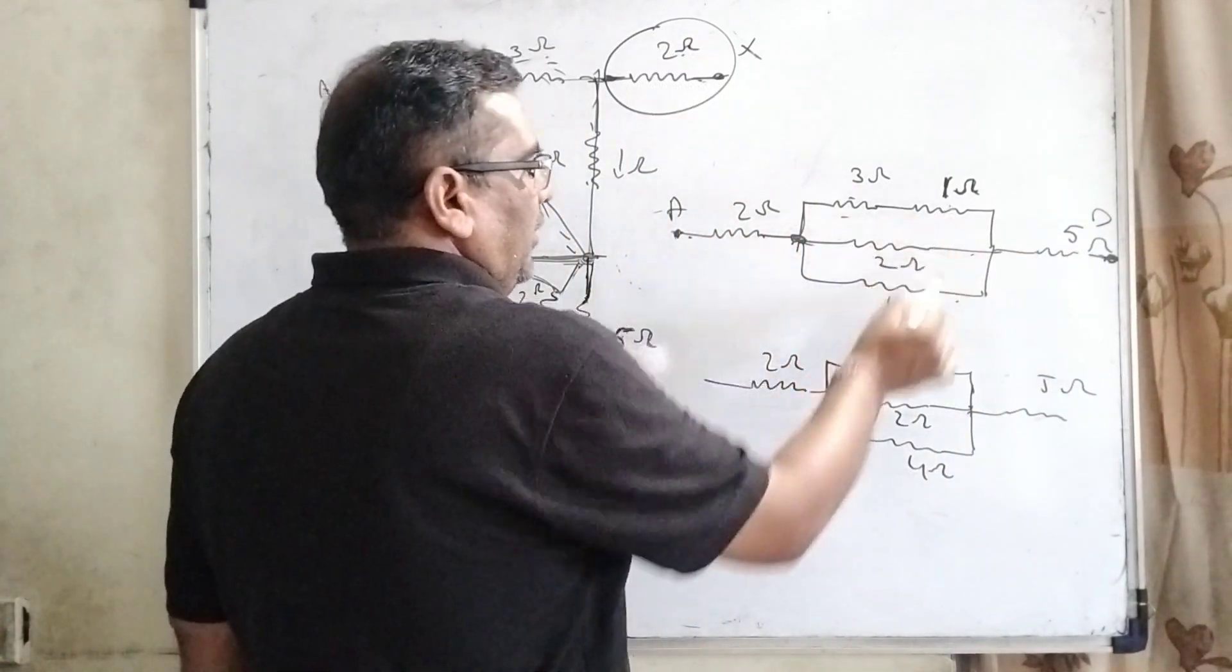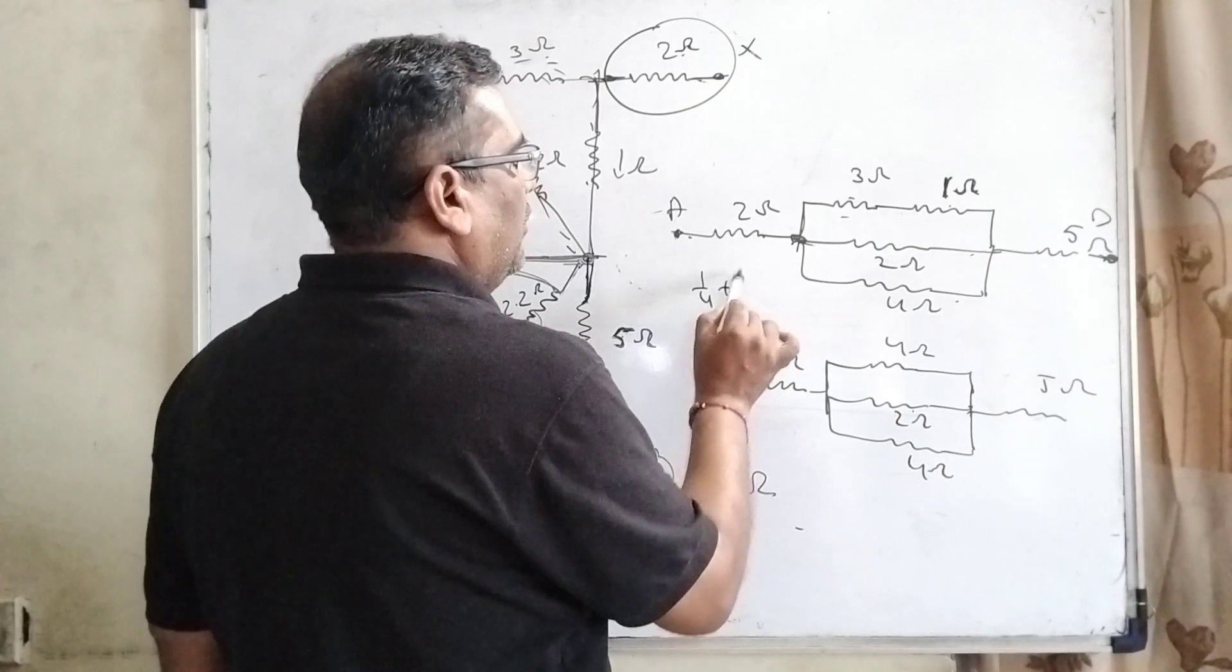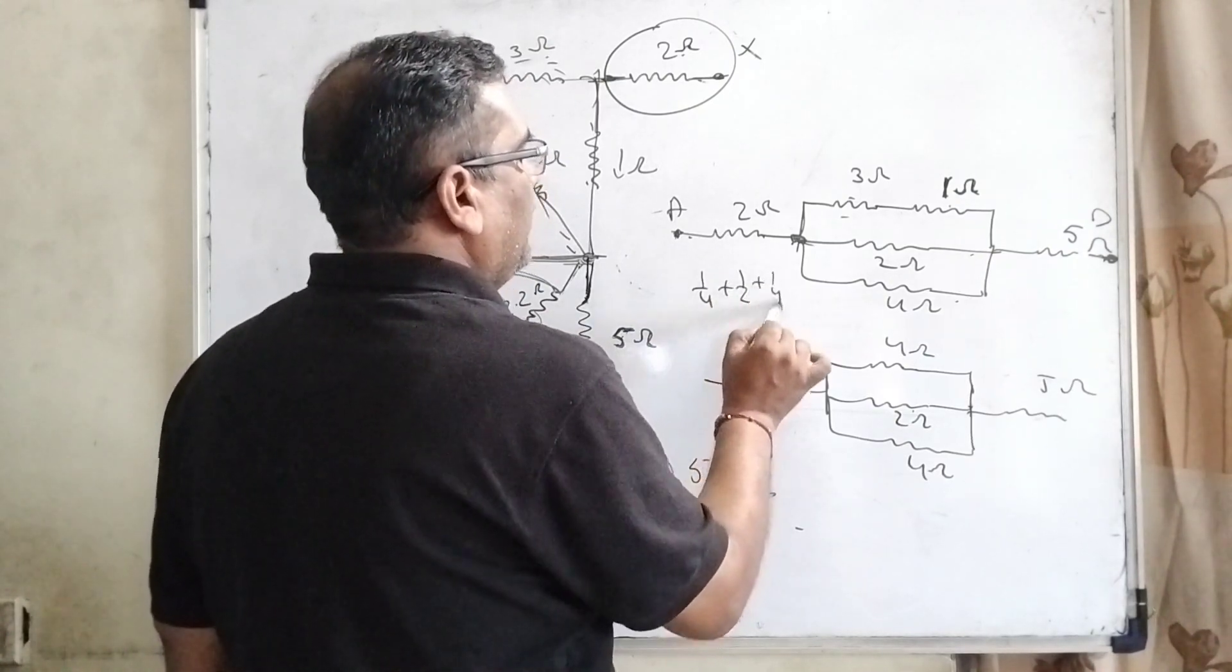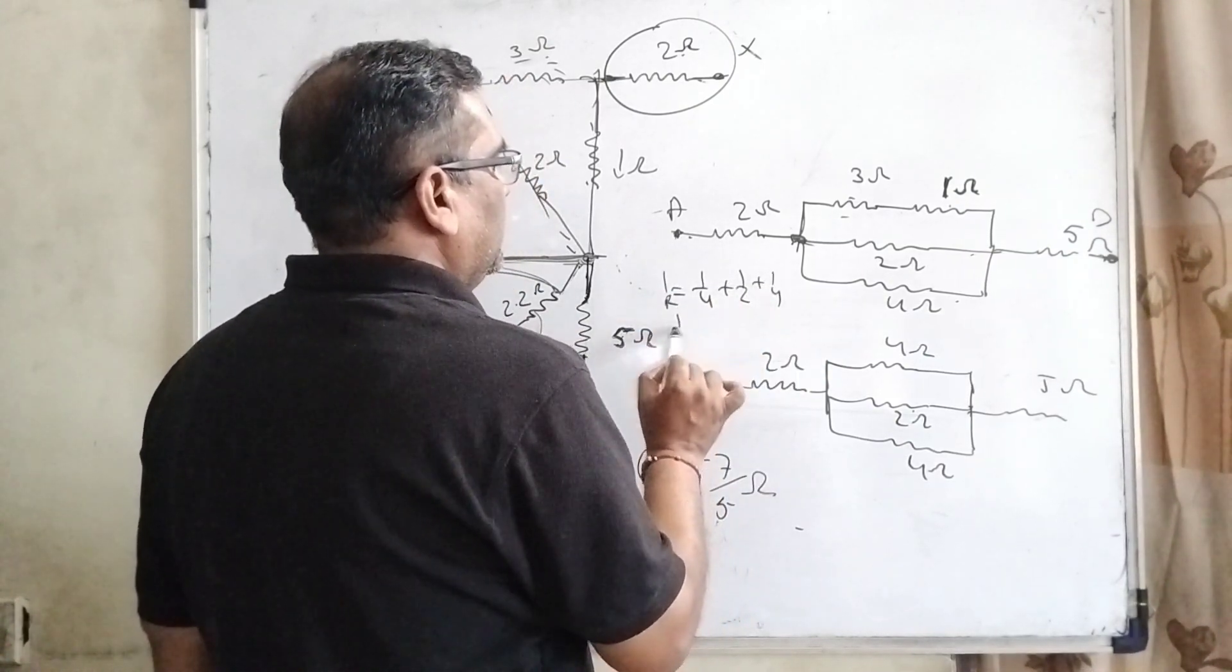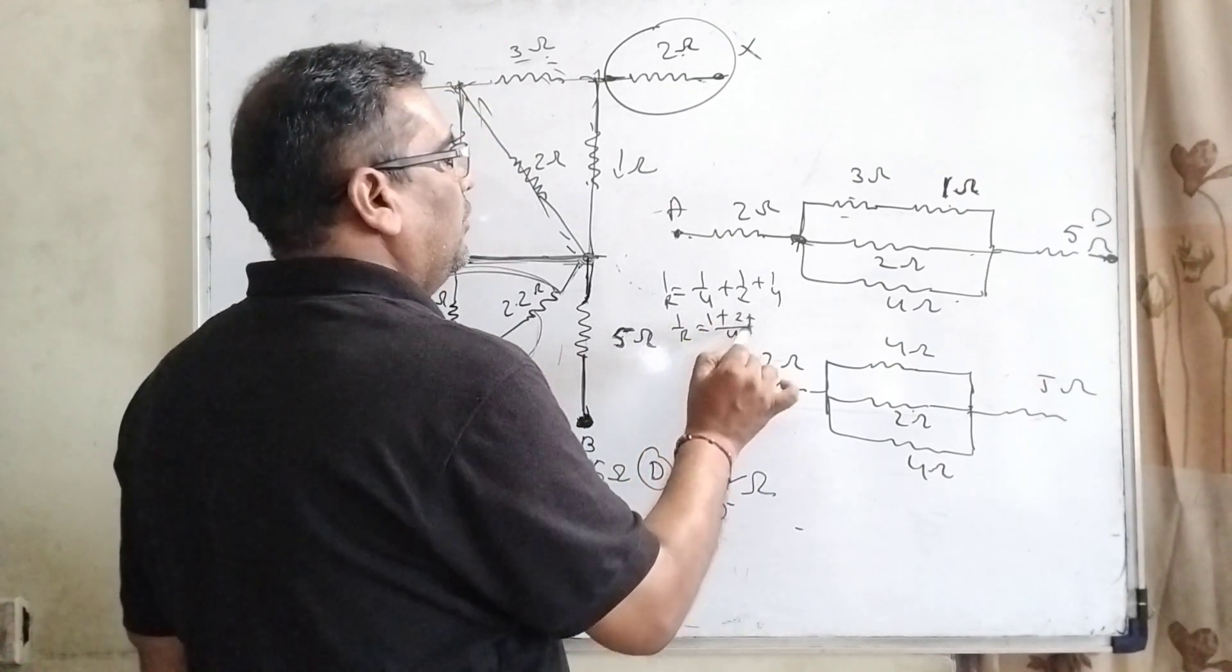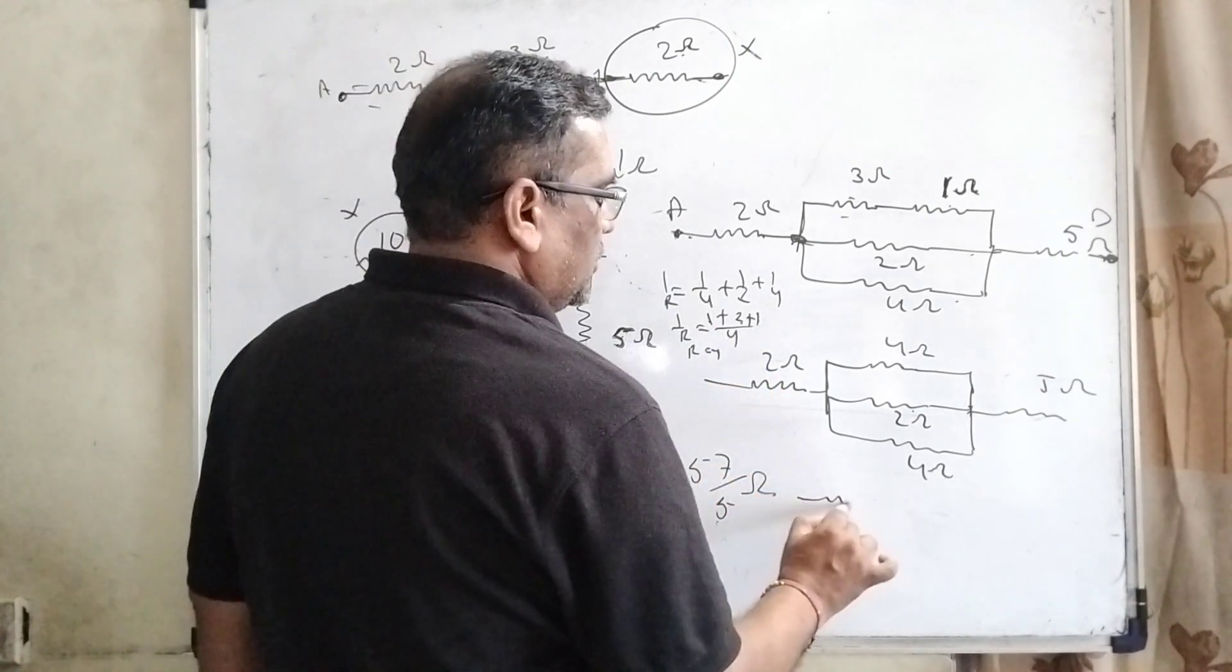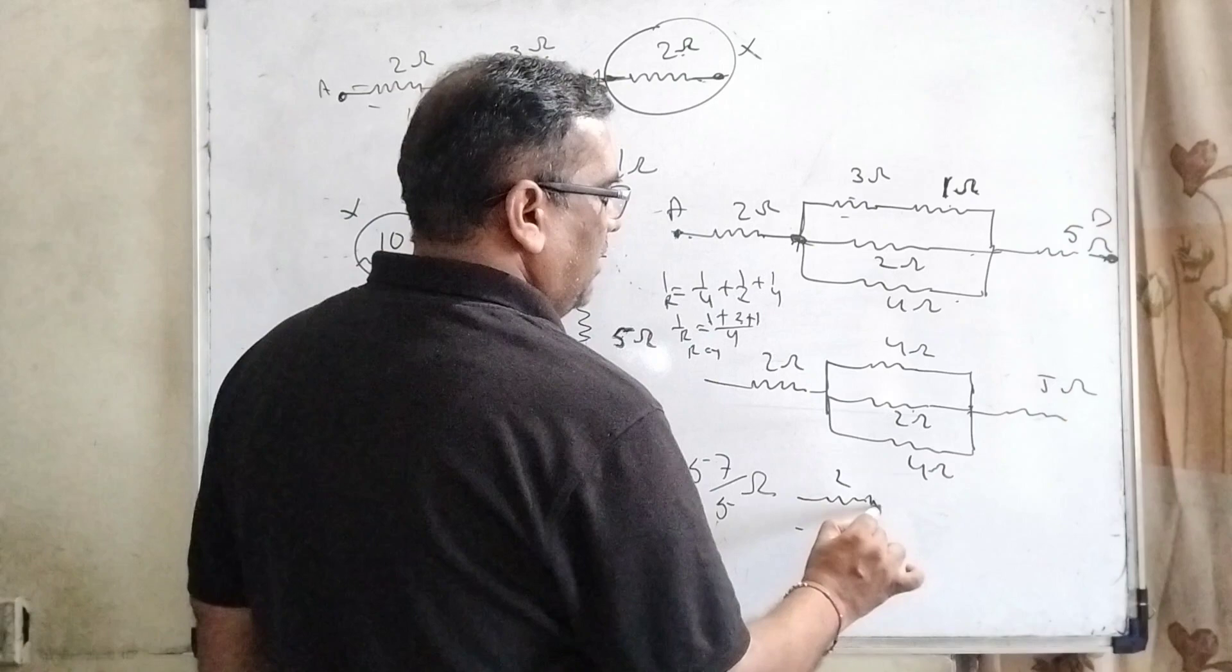Here 3 and 1 is 4, here 2 ohm, here 4 ohm. Then 1 by 4, 1 by 2 and 1 by 4 equal to 1 by R. Then taking the LCM is 4, 1, 2 to the 4 and 1, 2 and 1, 3 and 1, 4 and R becomes 1 ohm. So now again redraw this diagram.